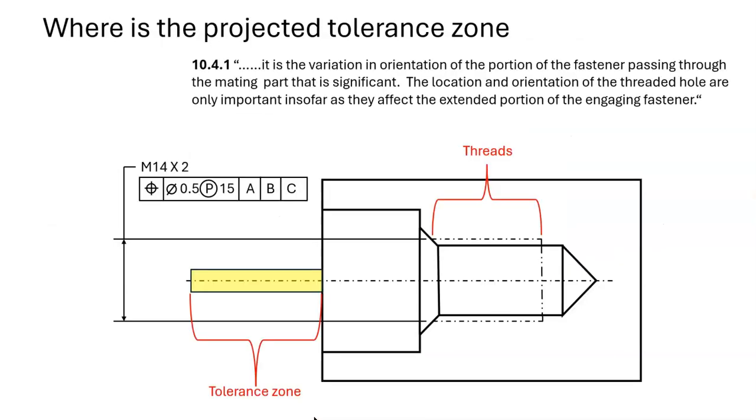Confusion sometimes arises when the threads do not extend to the surface of the part. The question then is, does the projected tolerance zone start at the end of the threads or at the surface of the part?